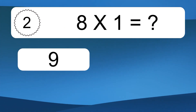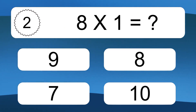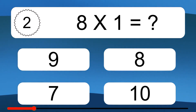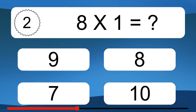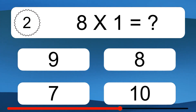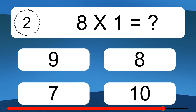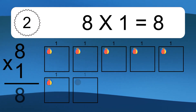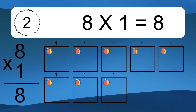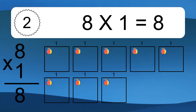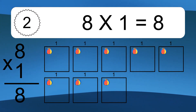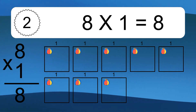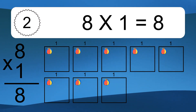8 times 1 equals what? 8 times 1 equals 8. We have 8 boxes, and each box has 1 colorful ball inside. If you count all the balls in all the boxes together, you will have 8 times 1 balls.